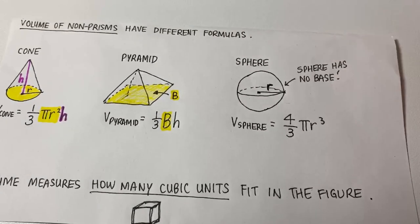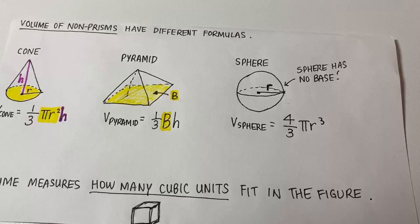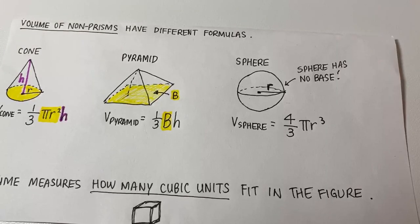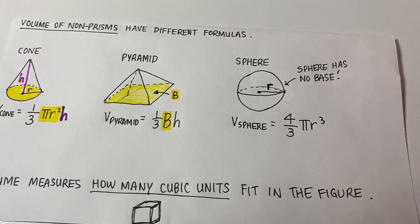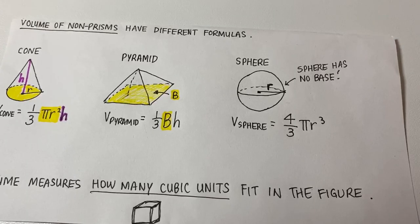Volume of a pyramid: one-third times B times H. Where B is the base area.